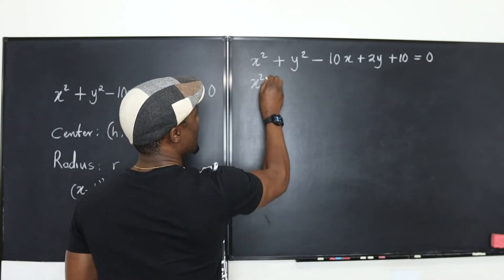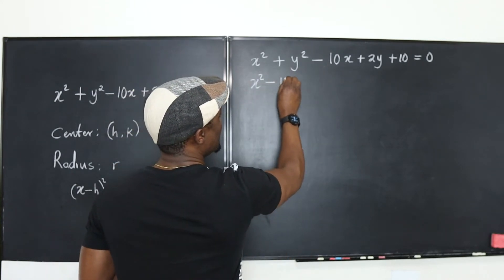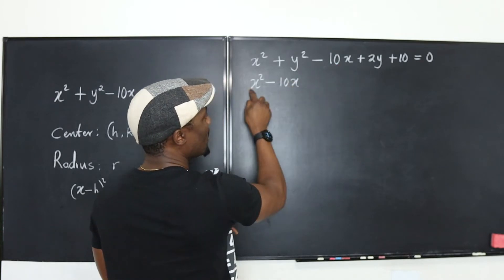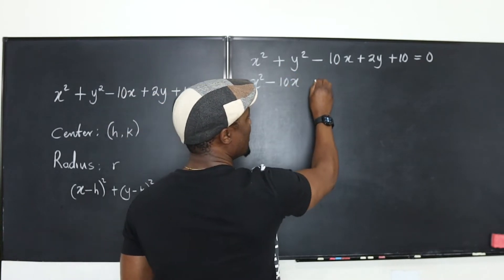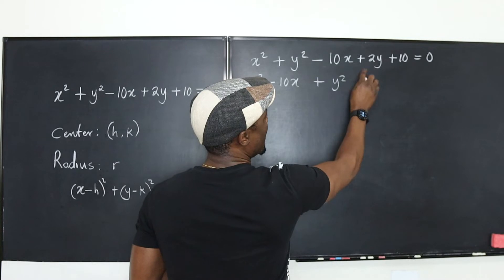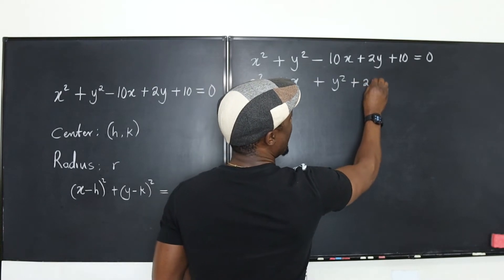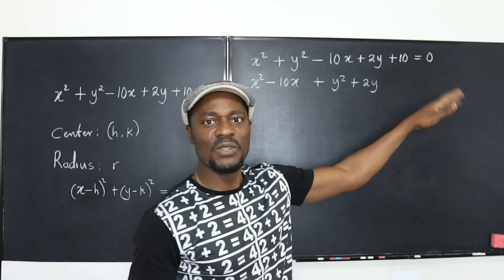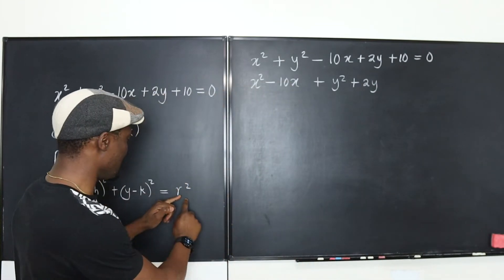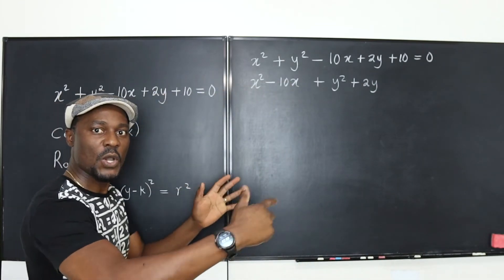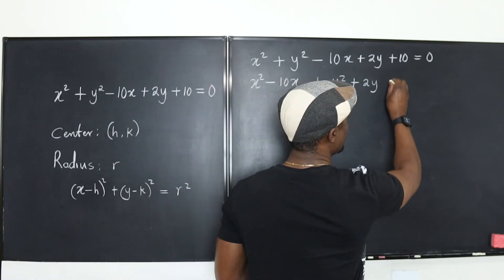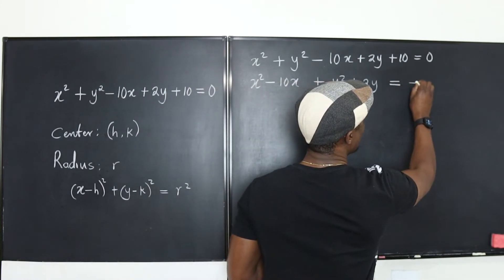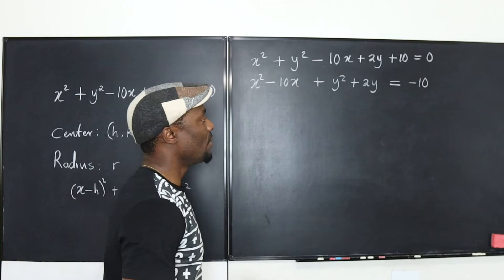I'm going to write x² - 10x, bringing this next to it, and do the same thing for the y² terms: y² + 2y. Just to be safe, I'm going to move this 10 to the other side because the actual constants go to the other side. This equals -10.